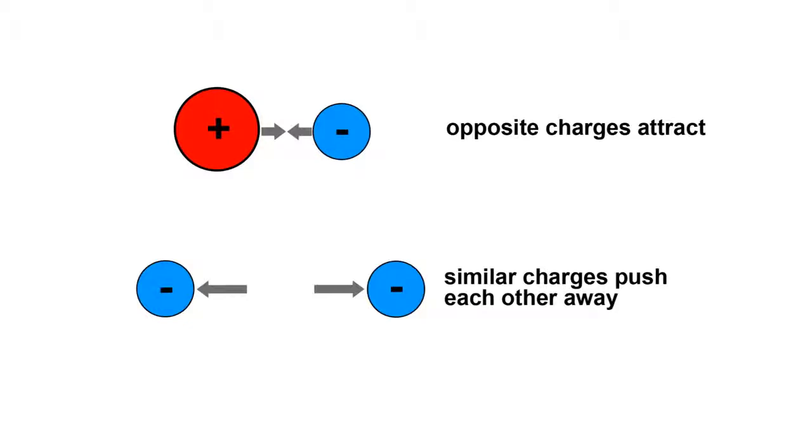So the positive nucleus of the atom will attract negative electrons, but if electrons get too close to each other they'll push each other away.